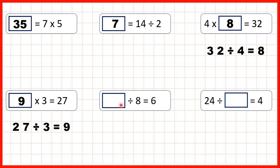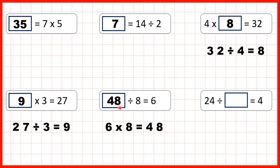Now, something divided by 8 equals 6. Here we have a missing number division, and in this question it's the first number — the dividend — that's missing. Division problems can be read backwards as multiplications, so to find our missing dividend, we can work out 6 times 8. That's 48, which means that 48 divided by 8 is 6.